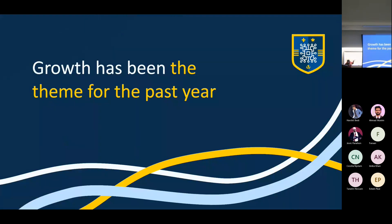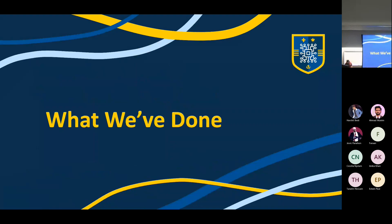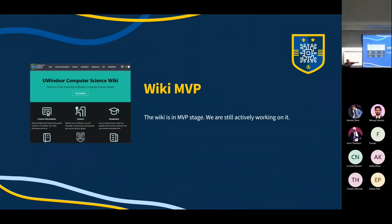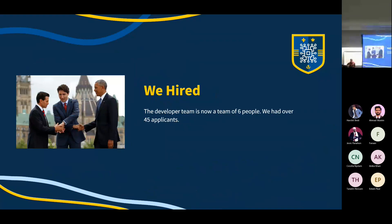Our theme has been growth for the past year. We've done a lot of different growing. We've come out with an MVP — Minimum Viable Product — for the Wiki. We're very happy with how it's been; it's been good progress. We hired a bunch of people — we had about 45 applicants and hired a few, and now we're a team of six.